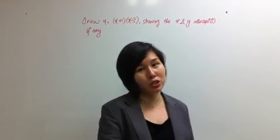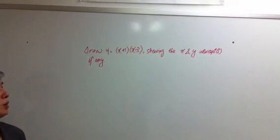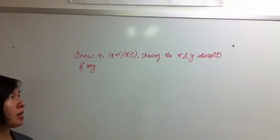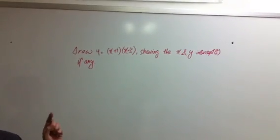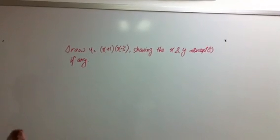Let's take a look at the question on the board. Draw y equals to bracket x plus 1, bracket x minus 3, showing the x and y intercepts, if any.